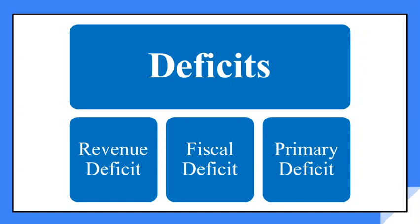Now we need to go back to basic knowledge to understand the FRBM Act. What is a deficit? There are three kinds of deficit in the budget. The first is revenue deficit, the second is fiscal deficit, and the third is primary deficit. This is pure macroeconomics basics — you can find this in your 12th class macroeconomics NCERT book as well.